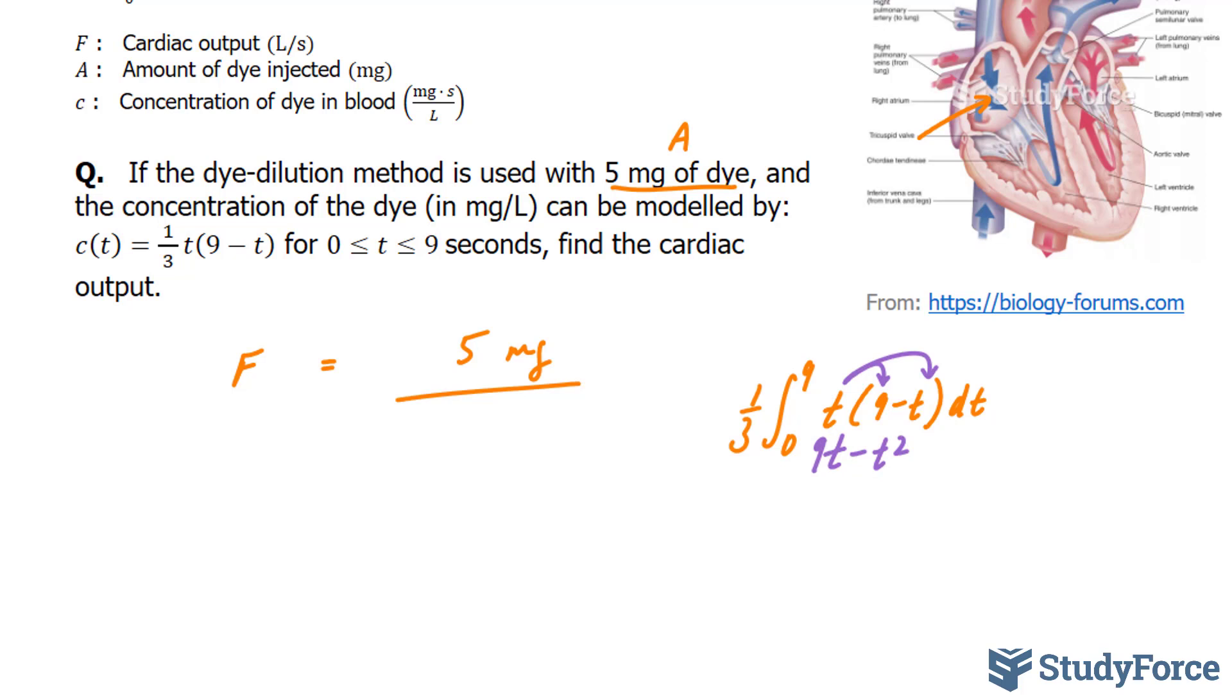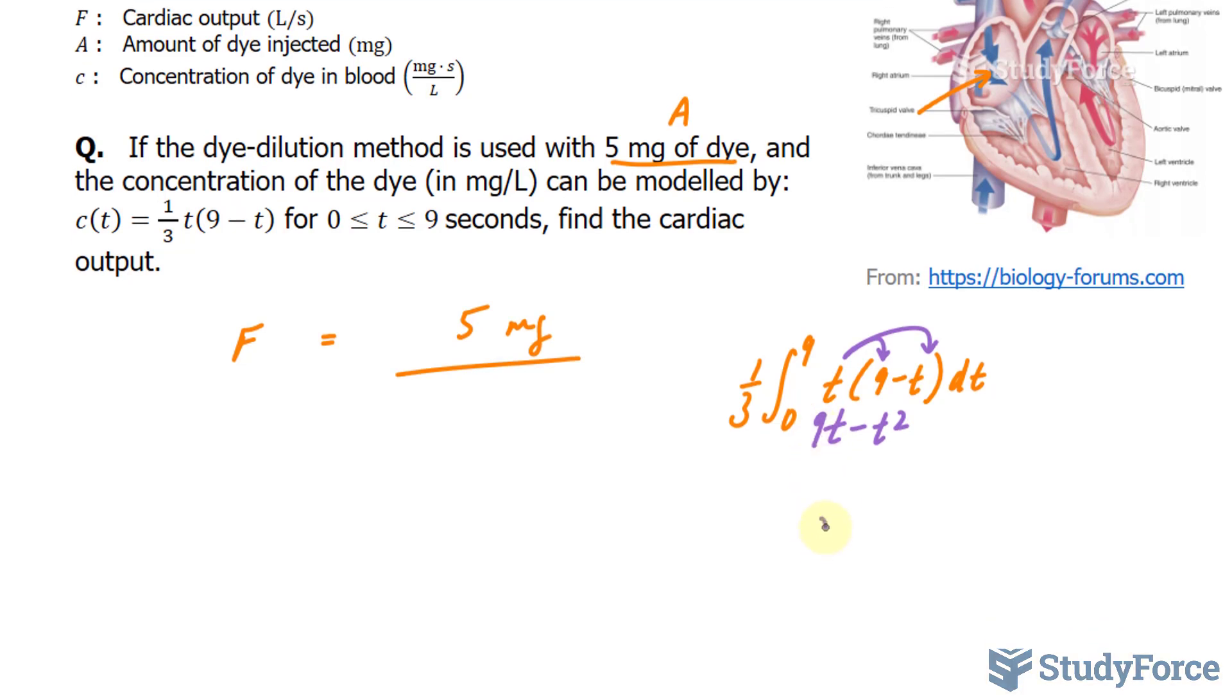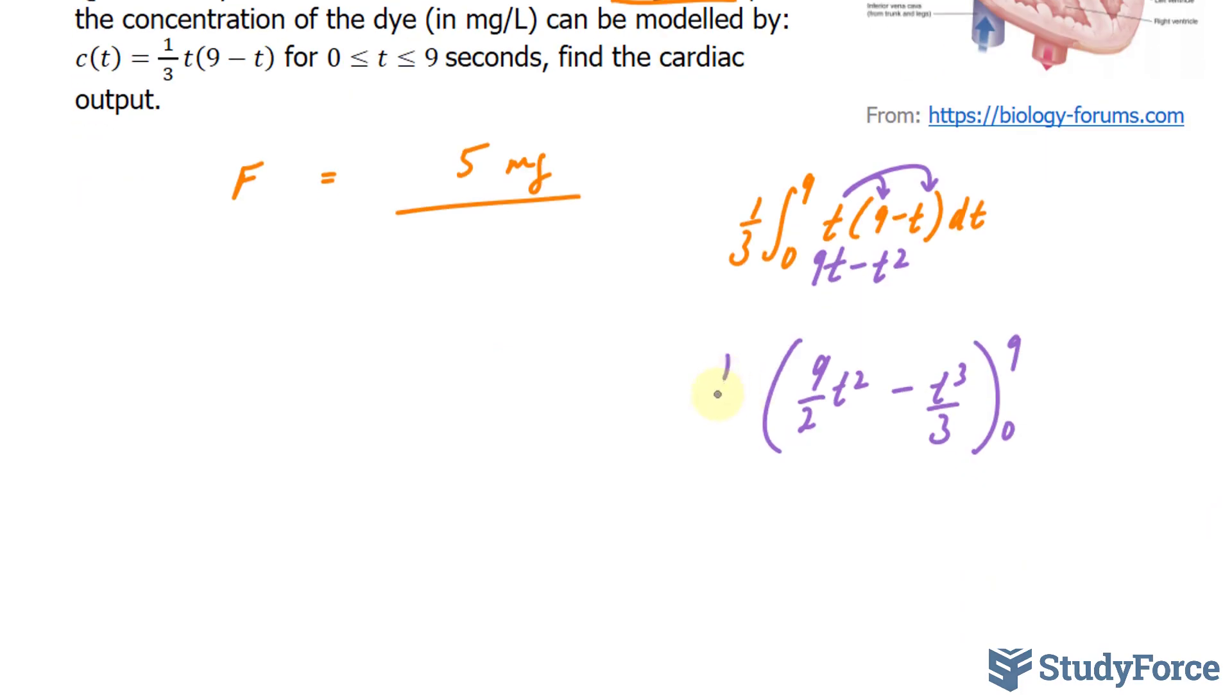Now I'll take the antiderivative of both of these terms individually. This becomes 9 over 2t to the power of 2, whereas this becomes t to the power of 3 over 3. Now I have to evaluate this at 0 and 9, and then multiply whatever I get by a third.